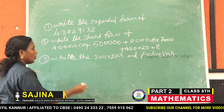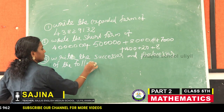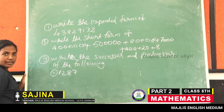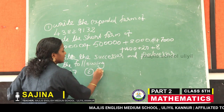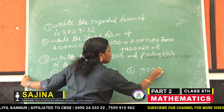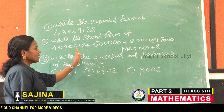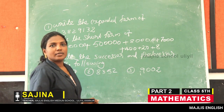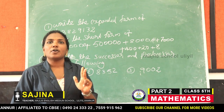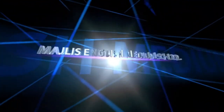Write the successor and predecessor of: first, 1,287; second, 8,352; third, 9,002. In this session, we learned about expanded form, short form, successor, and predecessor.